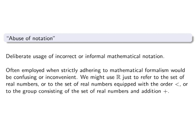Abuse of notation. Deliberate usage of incorrect or informal mathematical notation. Often employed when strictly adhering to mathematical formalism would be confusing or inconvenient. We might use R just to refer to the set of real numbers, or to the set of real numbers equipped with the order less than, or to the group consisting of the set of real numbers and addition.